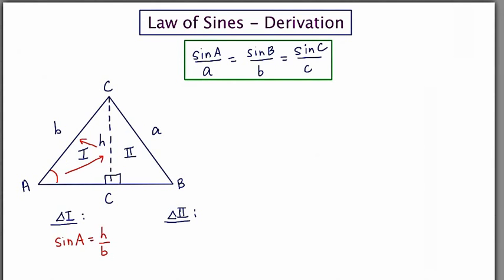I'll do the same thing for right triangle two, using B as my reference angle. Sine of B is also opposite over hypotenuse.